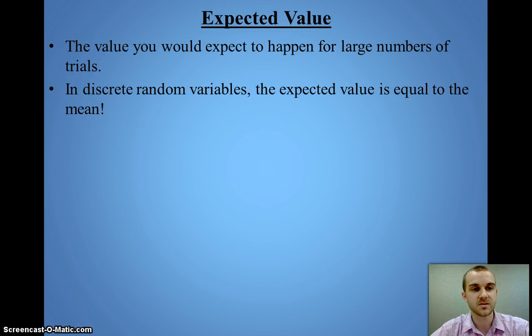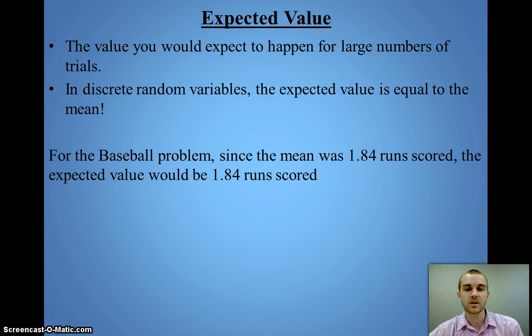The last thing here is the expected value. The expected value is a value you would expect to get as you continue to do a large number of trials. Because this is only 31 trials, but say we want to spread it over the entire season where there's over 130, 150 games. What we'd expect is that the expected value will be equal to the mean. In our case of the baseball game, if our mean was 1.84 runs, the expected value would be 1.84 runs as well.